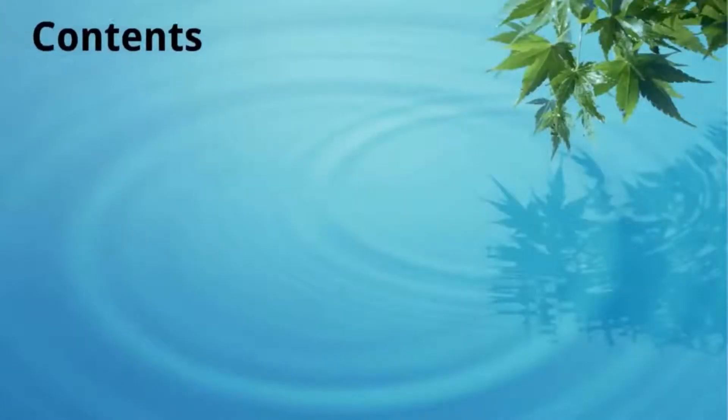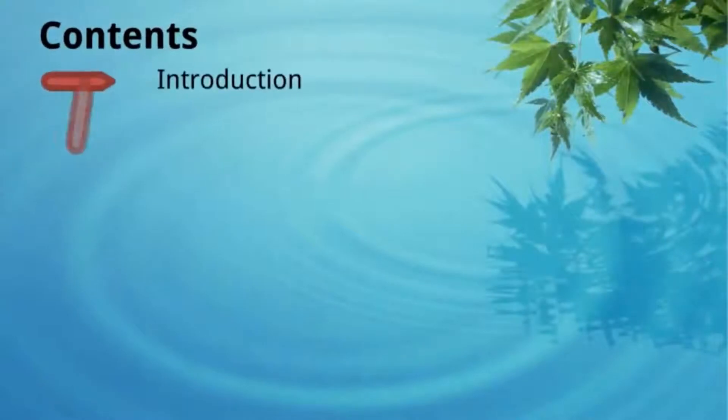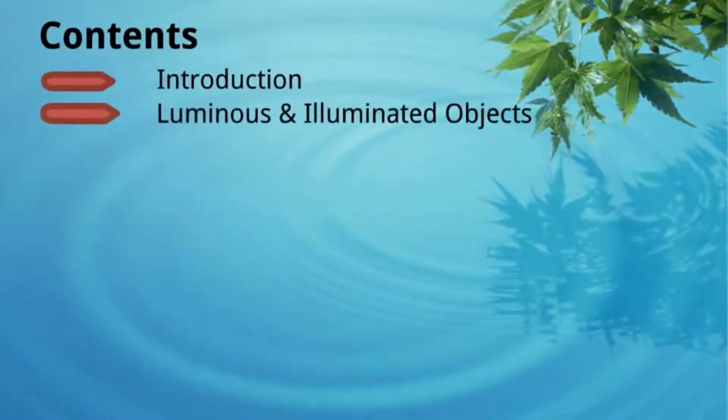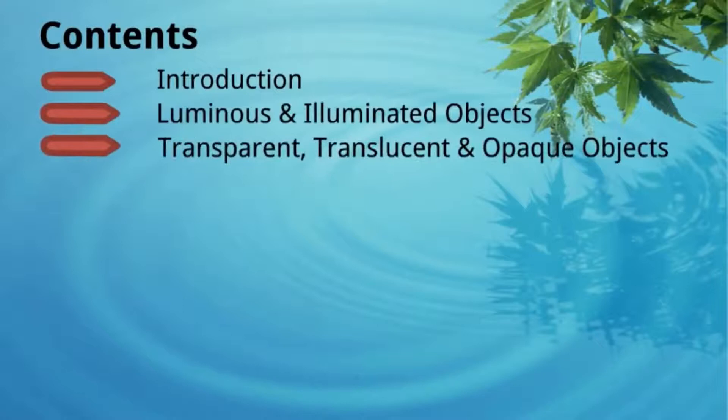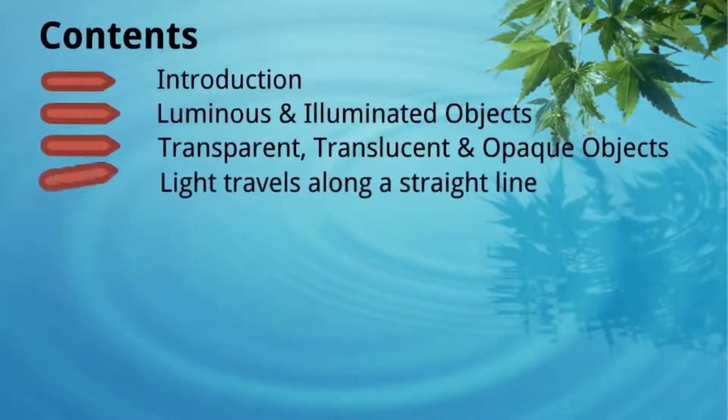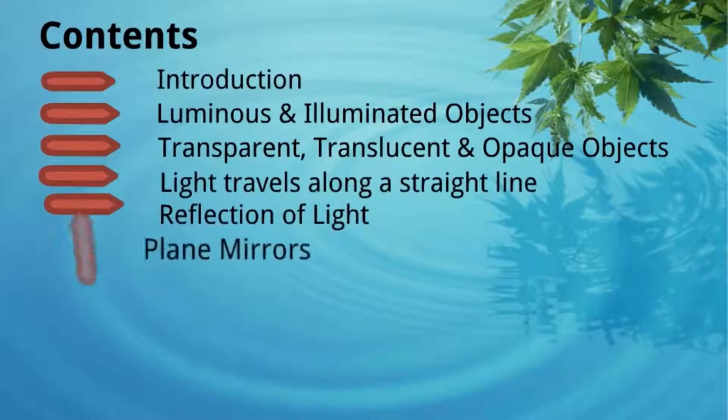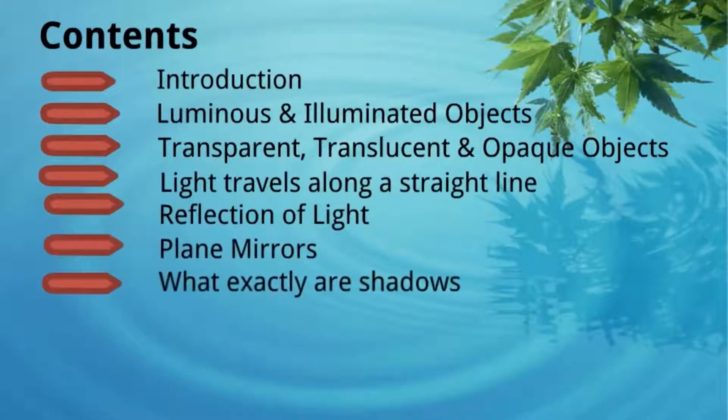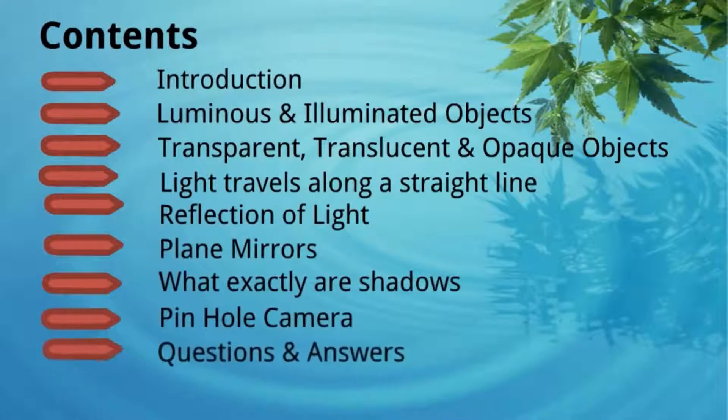Introduction: Light, Shadows and Reflection is divided into few parts - luminous and illuminated objects, transparent, translucent and opaque objects, light travels along a straight line, reflection of light, plane mirrors, what exactly are shadows, pinhole camera, and different questions and answers about light.